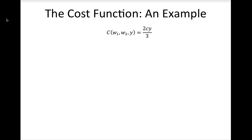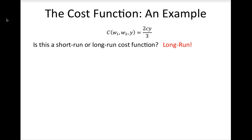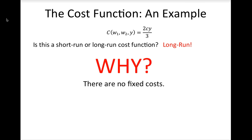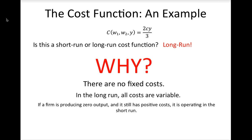Is this a short-run or a long-run cost function? The answer is that it is a long-run function, because there are no fixed costs. In the long run, all inputs are variable, so a firm will not have any fixed costs. One of the best ways to distinguish short run from long run is to ask how much it costs the firm to produce zero output. If a firm is producing zero output at a positive cost, it is operating in the short run. If it costs nothing to produce zero output, it is operating in the long run.